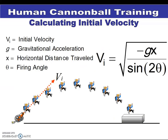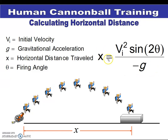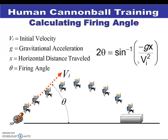Now if you're calculating it based on any angle somewhere between straight up and horizontal, then you have to use the range equation. That equation is: the square root of negative g times x, all over the sine of two times theta, equals your initial velocity. If you rearrange that equation, your distance or range equals the velocity squared times the sine of double your angle, all divided by gravity.